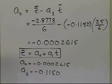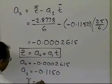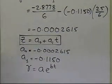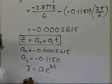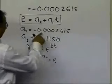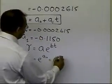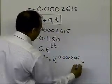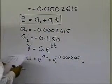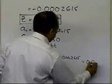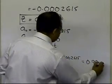What I need to find out is what are the constants of the exponential model, where gamma is equal to a e to the power bt. We already established that a is nothing but e to the power a0, so that's e to the power a0, which is this number here, minus 0.0002615, and that turns out to be 0.9997.